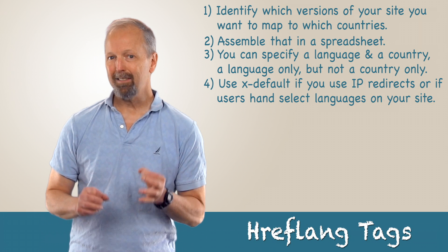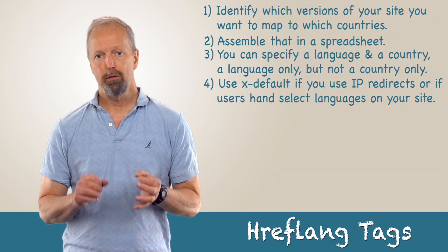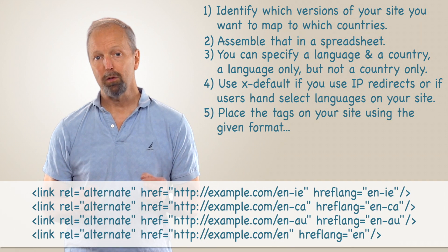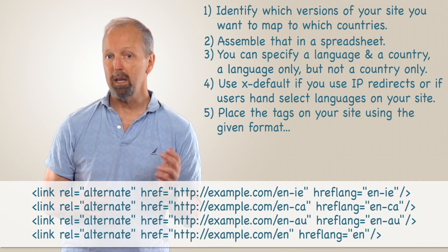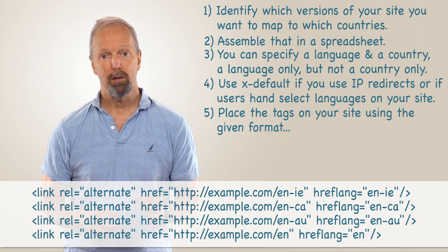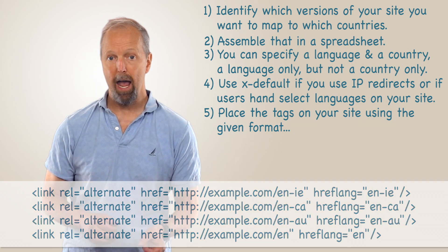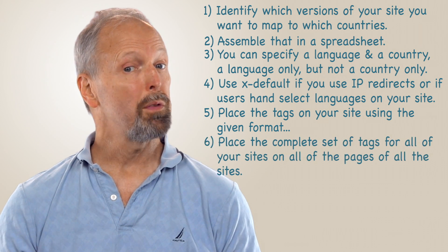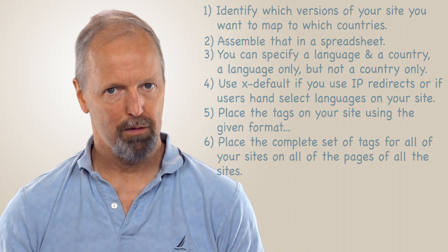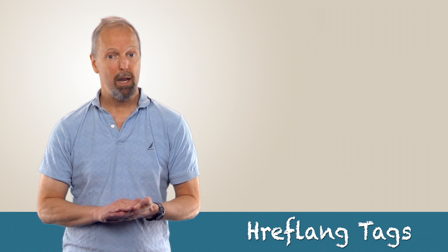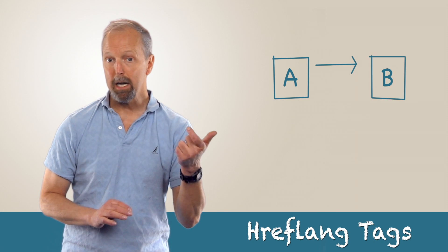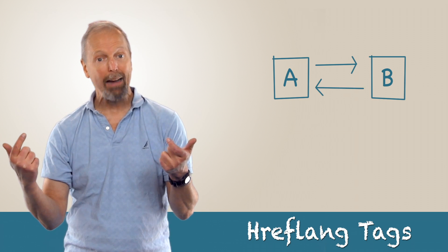Step four: use x-default if you use IP redirects or if users hand-select languages on your site. Step five: place the tags on your site using the format shown in the image below. The first three lines show combined language-country tags, and the fourth one is an example of a language-only tag. Finally, place the complete set of tags for all of your sites on all the pages of all the sites. This is as important as it is the behavior that Google is looking for. If page A has a tag pointing to page B, then page B must have a tag pointing back to page A.